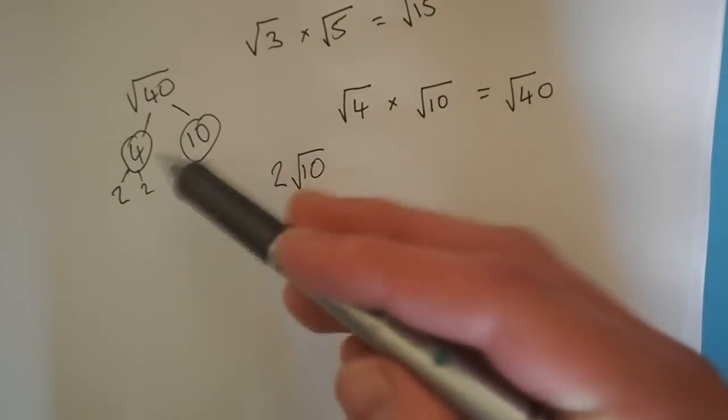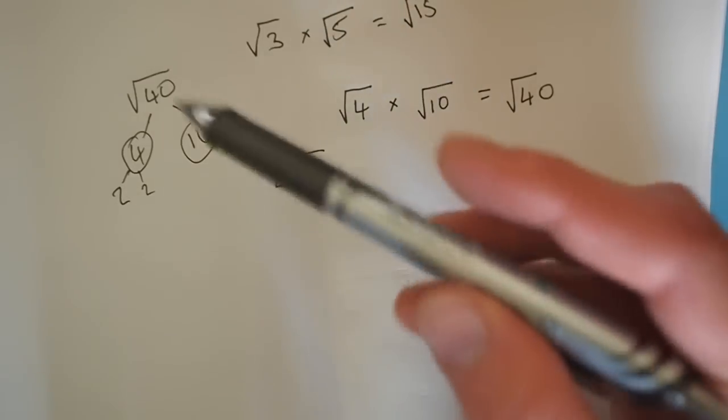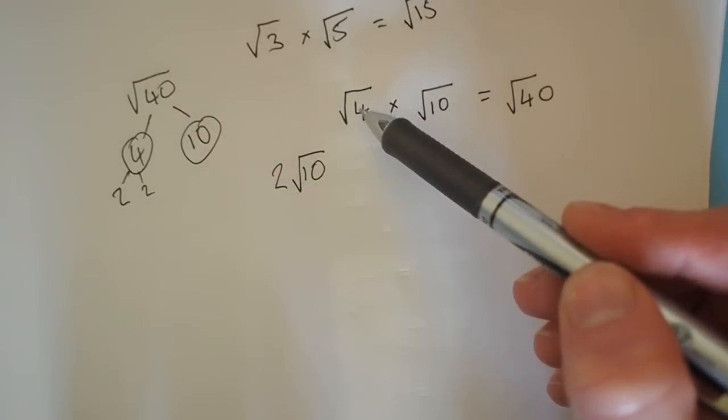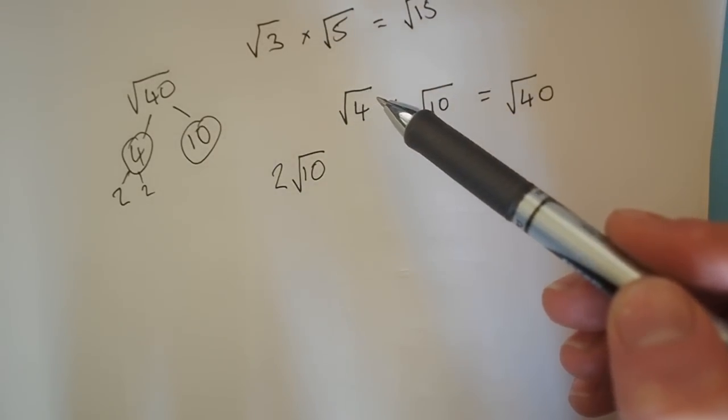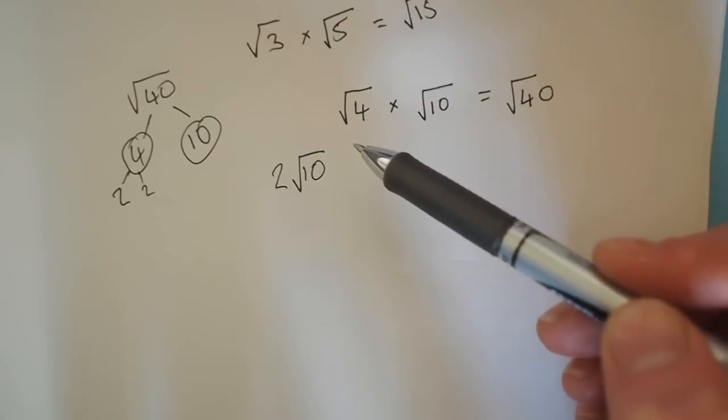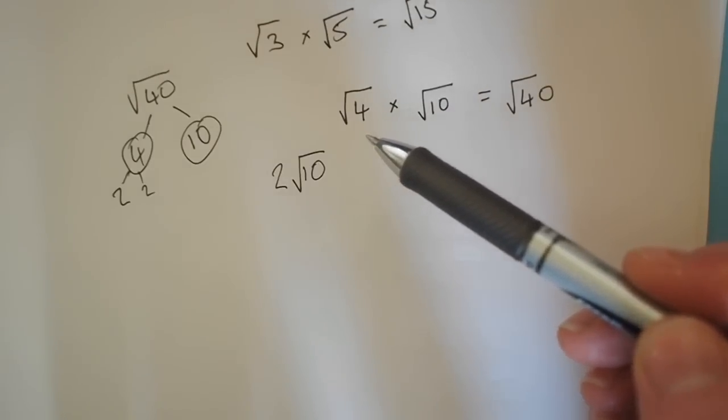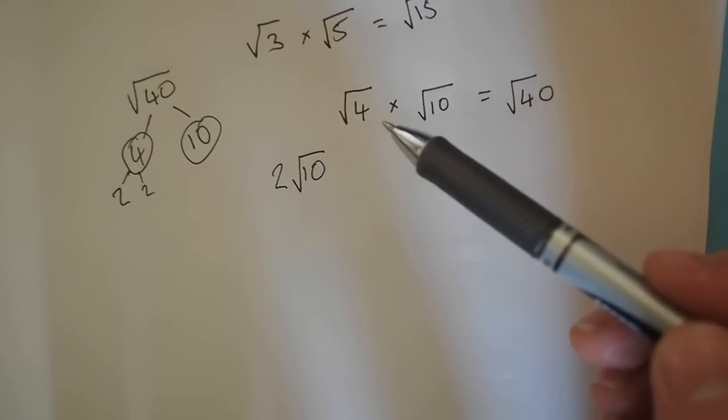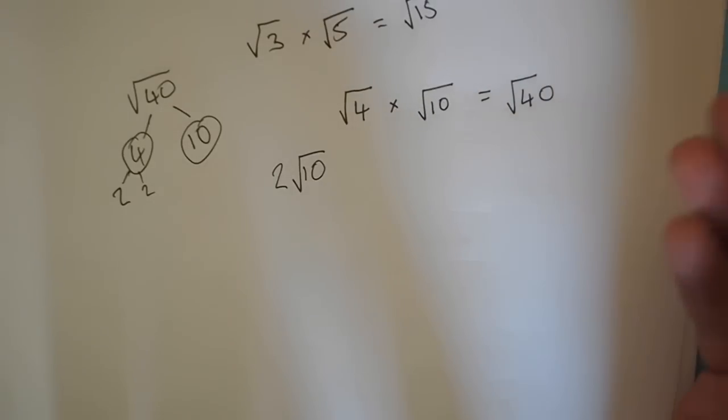So you see here we've got our factors here sort of multiplied out. What if we wanted to square root the 4? I mean we've got this 4 here which is not a surd. It's a square number and it can be square rooted into an integer. And the integer is a 2.